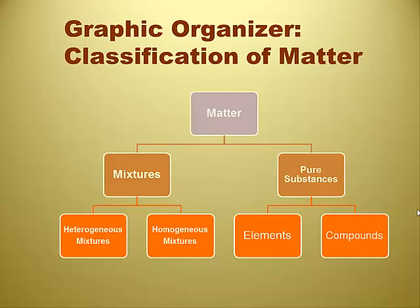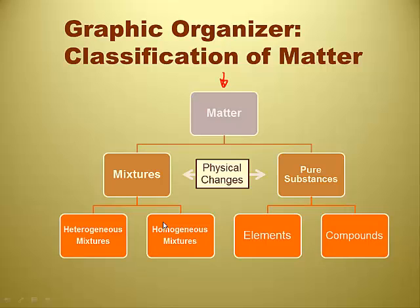Here's a graphic organizer for the classification of matter. All matter can be classified as either a mixture or a pure substance. If it's a pure substance, it breaks down into elements or compounds. If it's a mixture, it breaks down into heterogeneous or homogeneous mixtures. Physical changes come in between pure substances and mixtures — you could take two pure substances and mix them together to get a mixture, or separate a mixture back into pure substances using chromatography, distillation, or filtration. If you can do one forwards, you can go backwards.